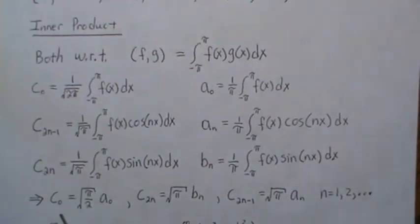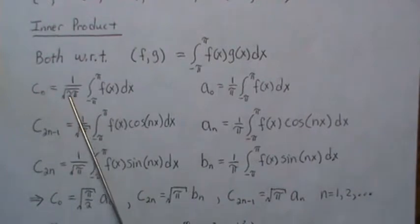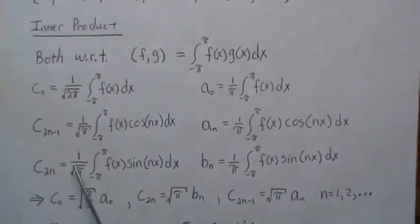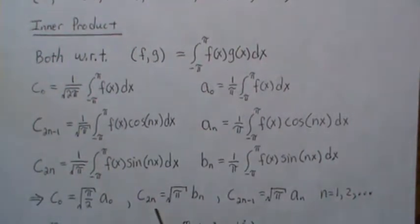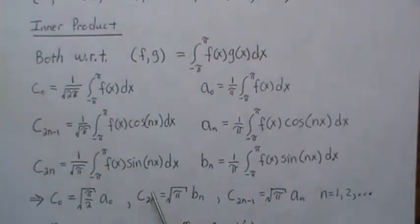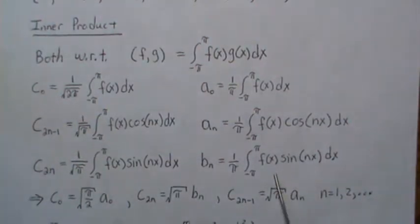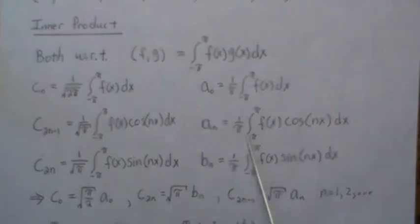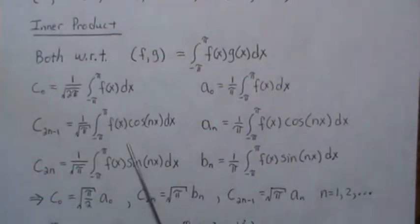Back-solving, C_0 is actually sqrt(pi/2) times A_0, so you can solve for C_0 in terms of A_0. For the C_{2N} squared — the even ones — the expressions look very similar, so back-solving gives C_{2N} in terms of B_N. For the odd ones, they also look very similar, and back-solving gives C_{2N-1} in terms of A_N.